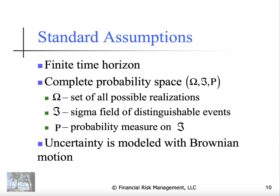Some standard assumptions: we generally assume a finite time horizon and a complete probability space. Omega — a capital omega — is the set of all possible realizations. For example, in a three-month call option, if I map out all the possible paths that an underlying stock price can go, omega represents all the possible paths through maturity. The sigma field of distinguishable events can be thought of as every single path and the likelihood of that path occurring, and we assume we can assign some probability to those different paths.